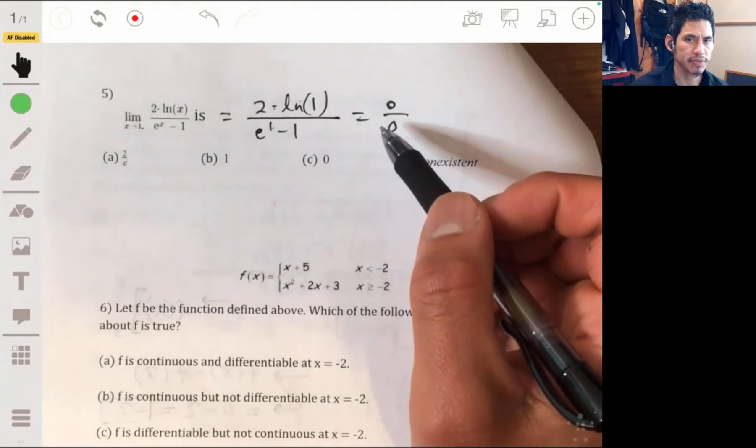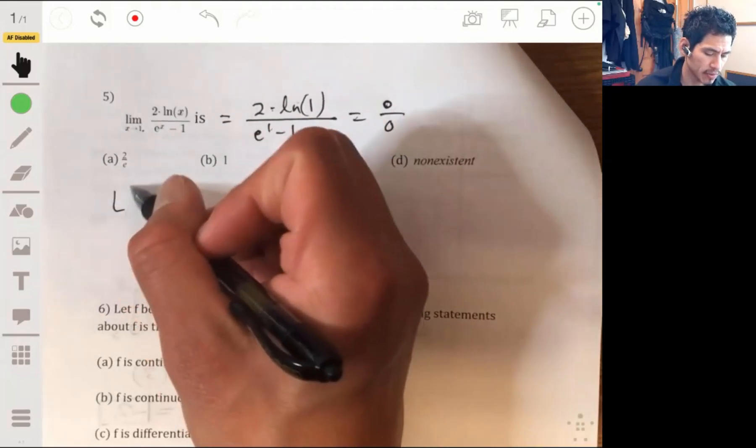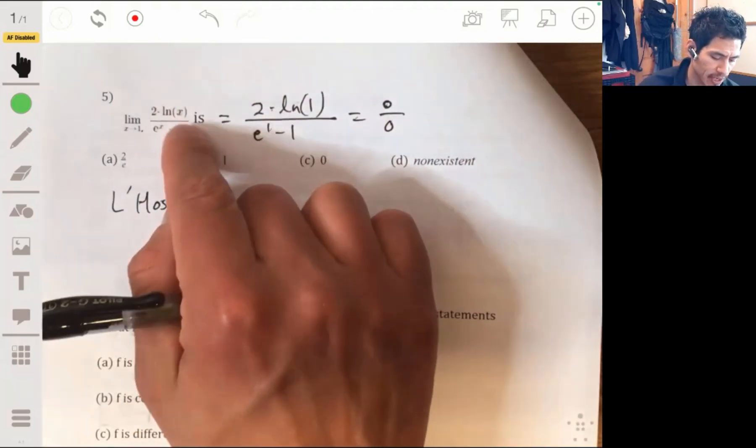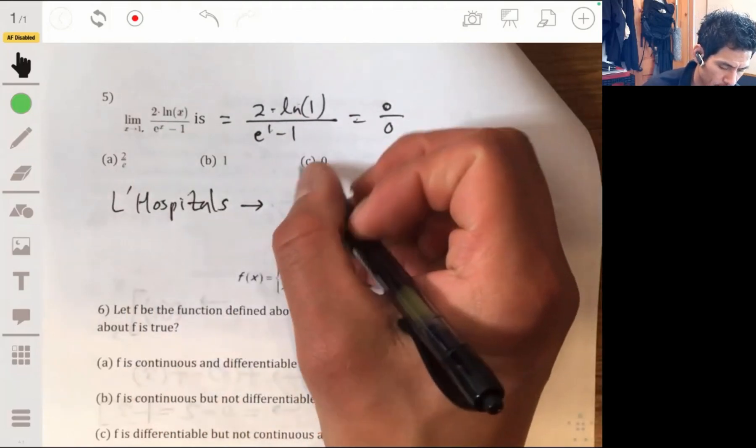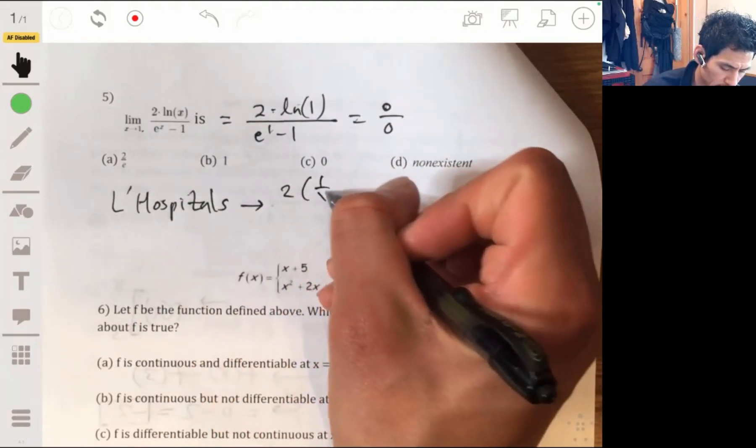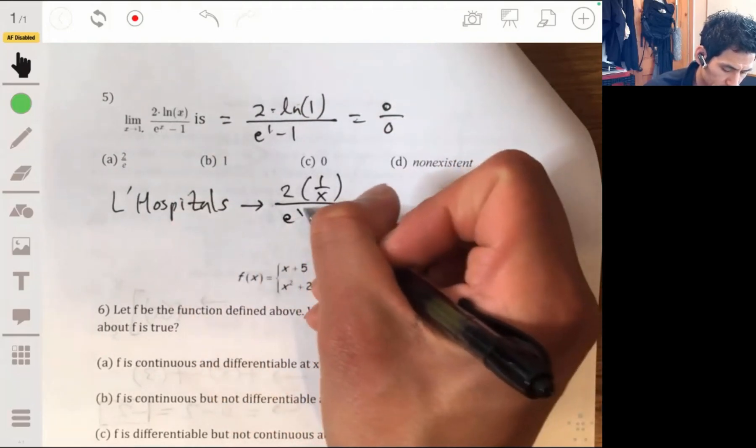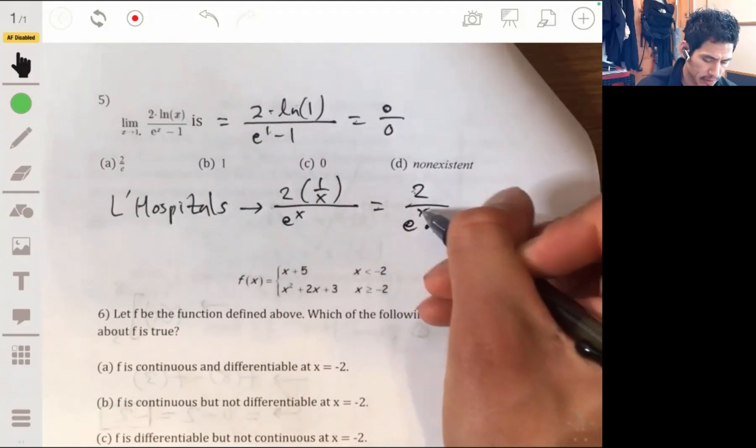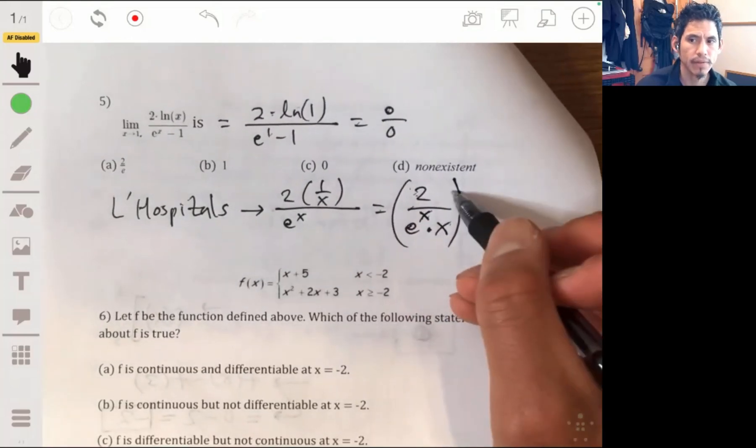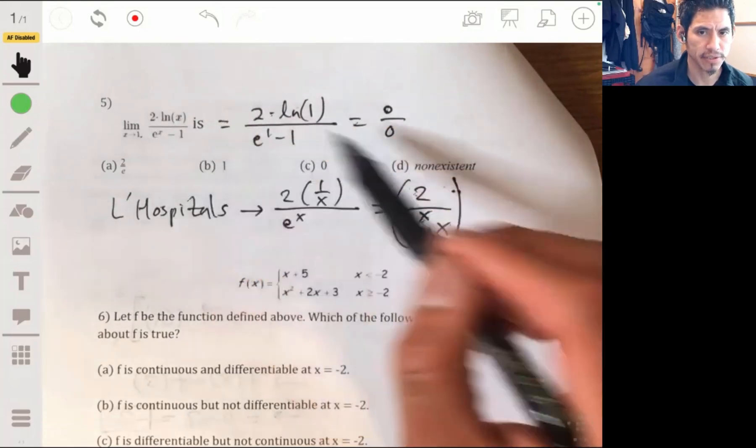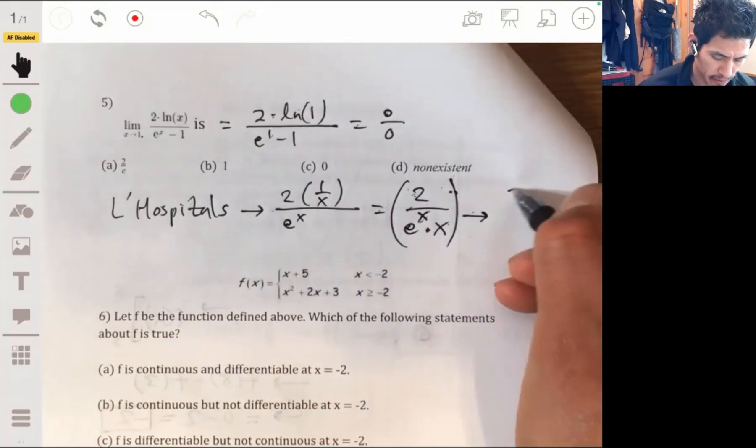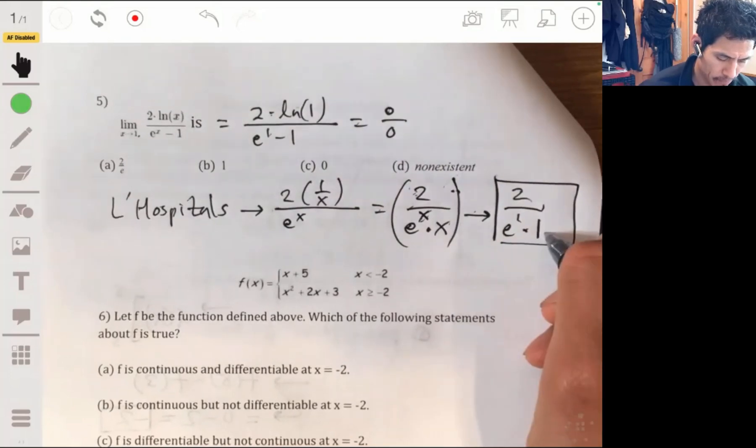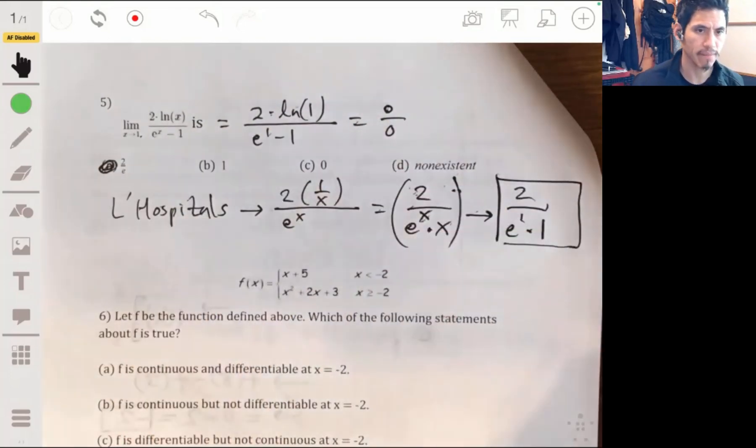So, when this happens, we're going to use L'Hospital's rule, which means we just take the derivative of the top over the derivative of the bottom. So, we get 2 times the 1 over x over e to the x, which just happens to be 2 over e to the x times x. And then we try it again. Then we plug 1 in again and see if it works. So, plugging 1 into here, we'll get 2 over e to the 1 times 1, which is just 2 over e. And that's our answer. Our answer is A.